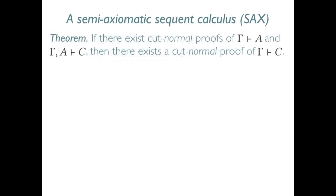So our theorem then is that if there exist cut normal proofs of gamma turnstile A and gamma A turnstile C, then there exists a cut normal proof of gamma turnstile C.